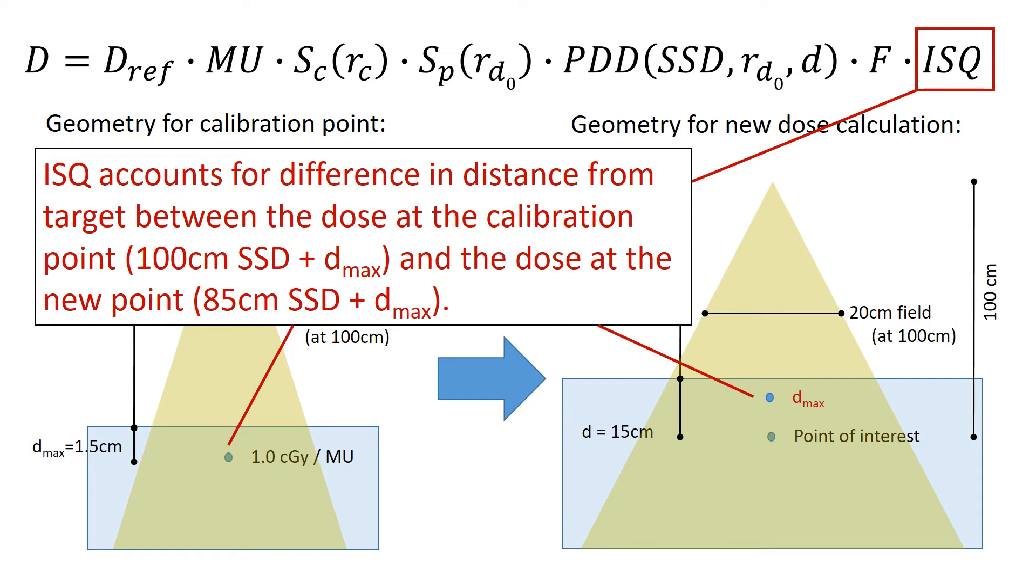And so the inverse square accounts for the difference in the distance from the target between the dose at the calibration point, that's 100 cm SSD plus D max, and the dose at the new point, which is going to be the new point that you start at from your PDD.